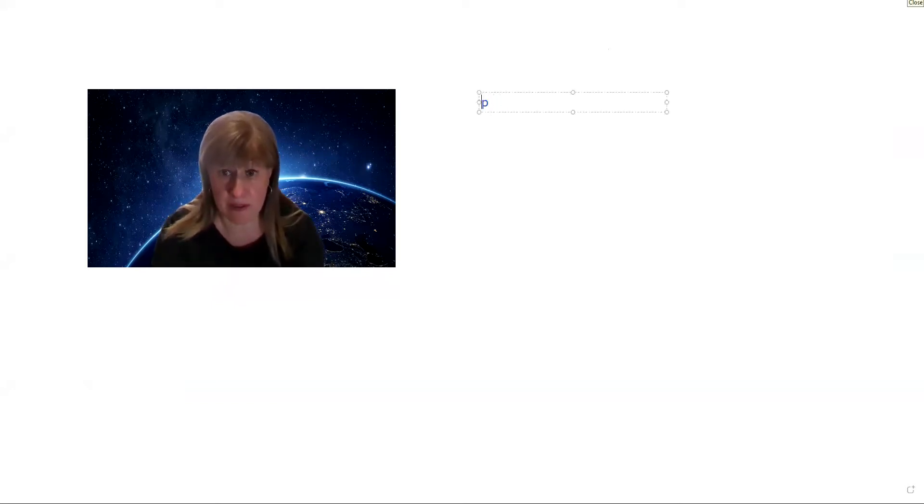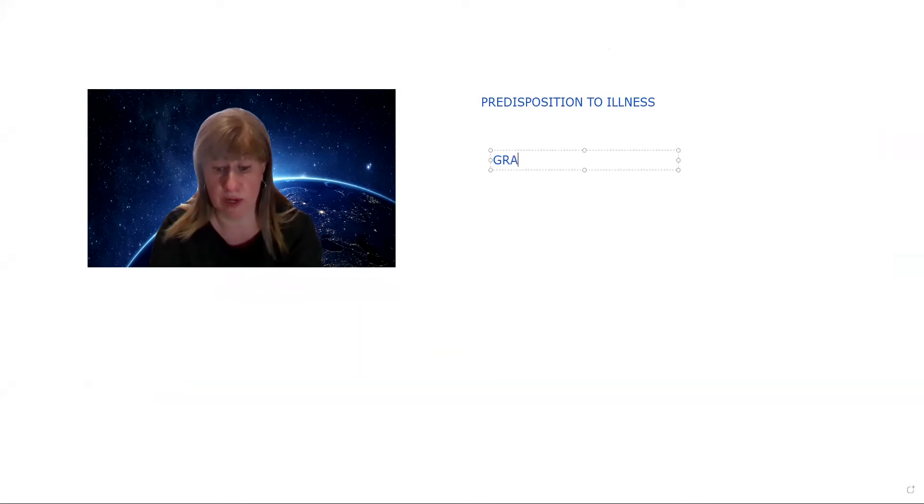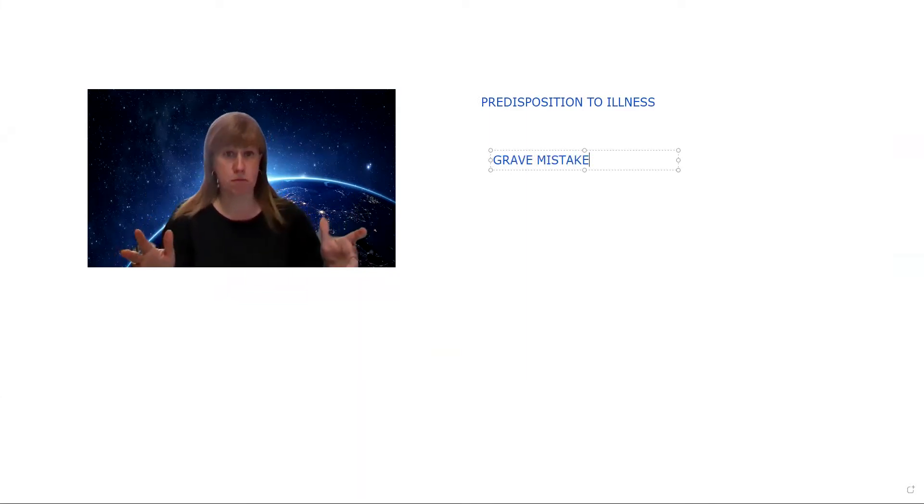We're going to clear it all and begin here. Andre Luiz, in the book Evolution into Worlds, Chapter 19 tells us that the predisposition to illness begins where? It begins when we make a grave mistake.